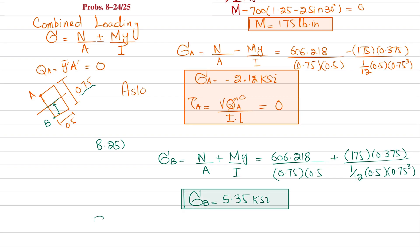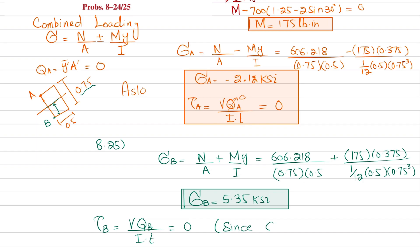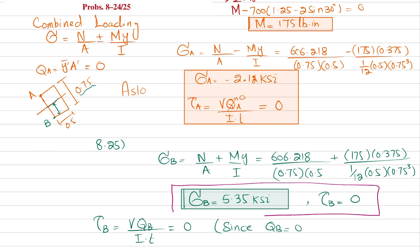For shear stress at point B, tau equals V times Q-B divided by I times t. Point B is also at the outermost fiber, so there is no area above or below it — A-dash equals zero, meaning Q-B equals y-bar times A-dash equals zero. Therefore the shear stress at point B is also equal to zero.